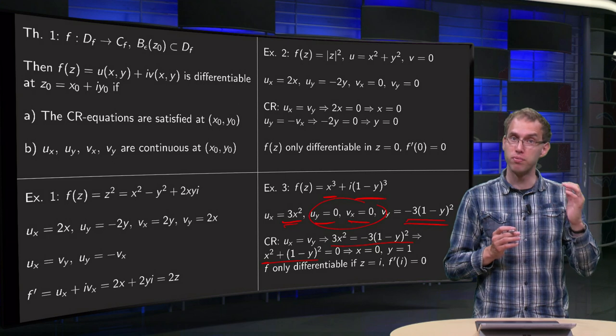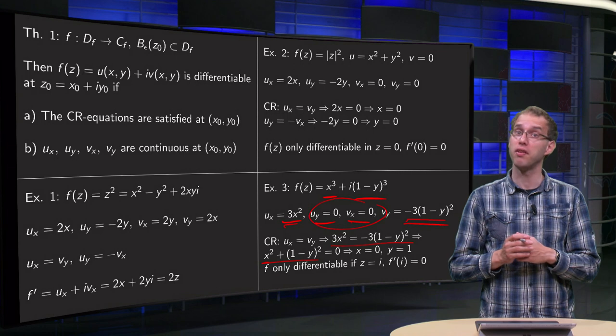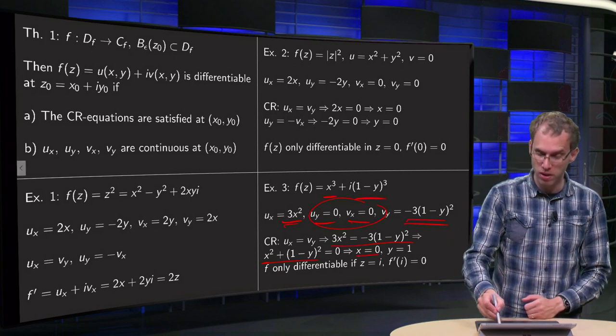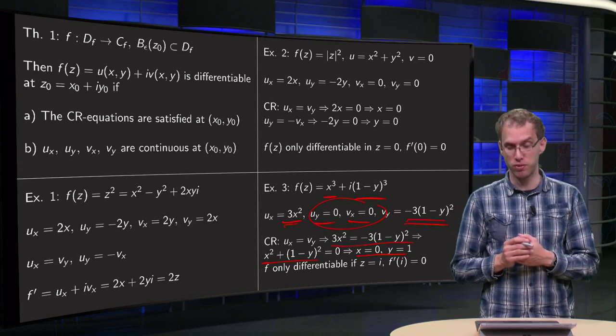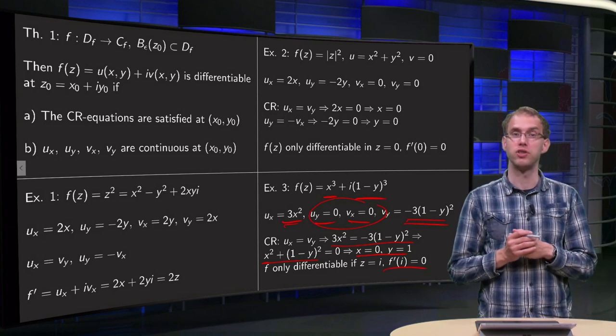It's only possible if both of them are 0, so if x squared equals 0, so x equals 0. And if (1 minus y) squared equals 0, so if y equals 1. So f is differentiable only at x equals 0, y equals 1, so at z equals i. And you can find this derivative as f prime at i equals 0.